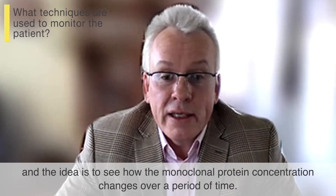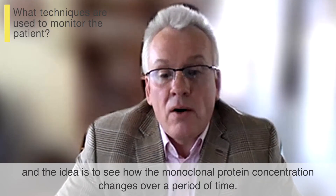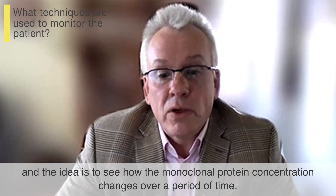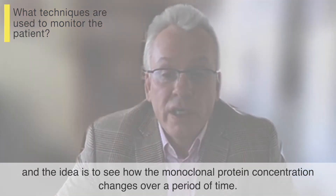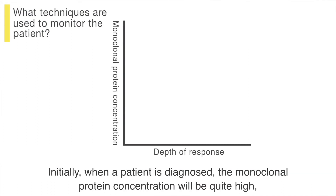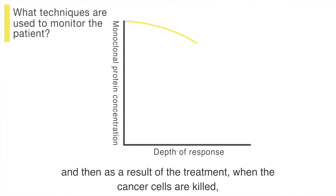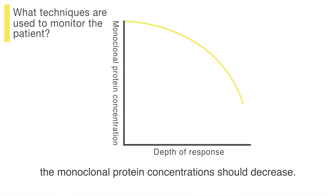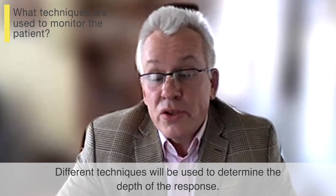Different lab techniques will be used to monitor the patient, and the idea is to see how the monoclonal protein concentration changes over a period of time. Initially, when the patient is diagnosed, the monoclonal protein concentration will be quite high, and then as a result of the treatment, when the cancer cells are killed, the monoclonal protein concentration should decrease.